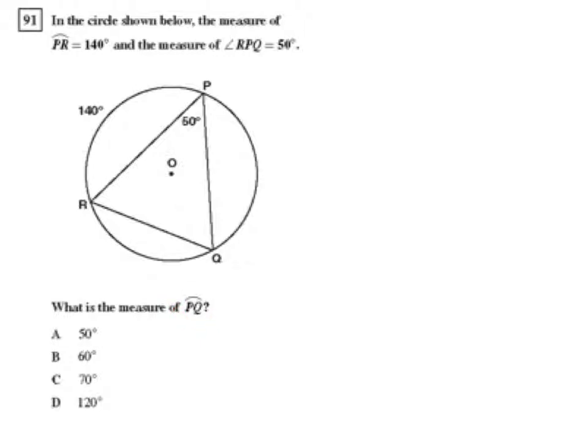In the previous problem, we discussed how an arc takes exactly the same measure as the angle whose vertex intercepts that part of the arc.